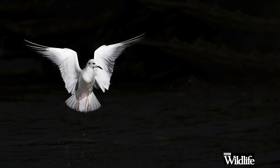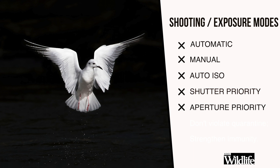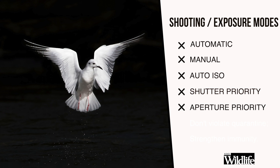In simple terms there are five different ways of exposing your images: automatic, manual, auto ISO, shutter priority, and aperture priority. All other things being equal, if you do them right any one of these will give you the correct exposure — near enough anyway — but there are some very important differences between them.